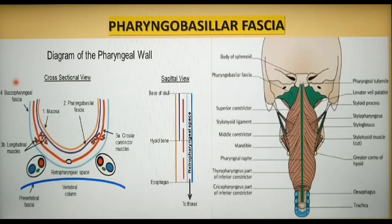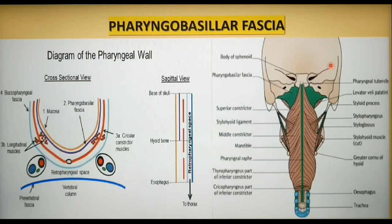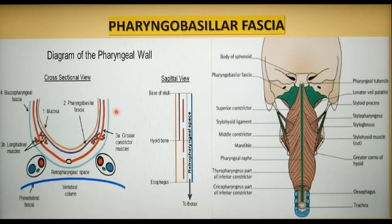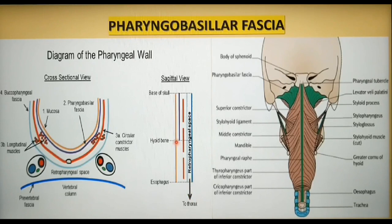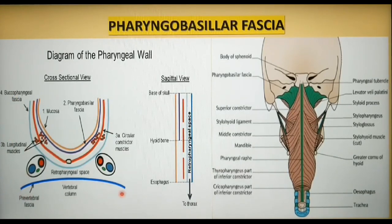The pharyngobasilar fascia is the thickened part of the deep cervical fascia between the upper border of the superior constrictor muscle and the base of the skull, lying deep to the pharyngeal muscles. This figure depicts the relationship between the prevertebral fascia (dark blue), the buccopharyngeal fascia (light blue), and the pharyngobasilar fascia. Between the pharyngobasilar and buccopharyngeal fascia lie the constrictor muscles of the pharynx.